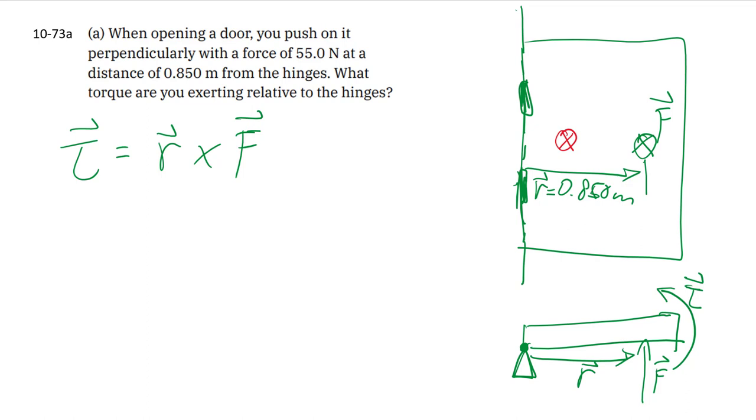Because only perpendicular forces count. In this case, the entire force is perpendicular, so everything counts. And then the direction of the vector is going to be perpendicular to both R and F. And in this case, to be consistent with our definition of the torque vector with our right-hand rule, it has to be out of the page.